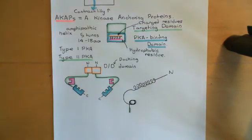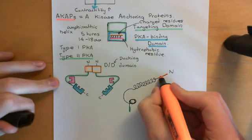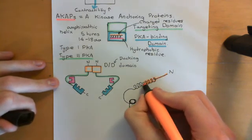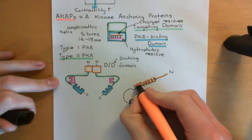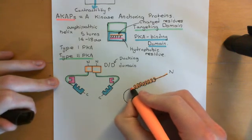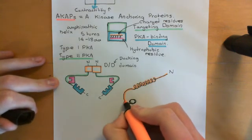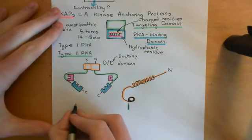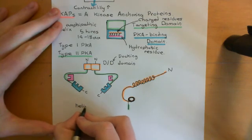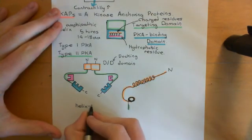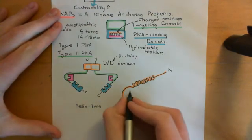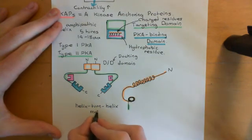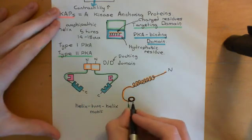All of this is the dimerization/docking domain, which consists of this helix-turn-helix motif — a helix followed by a turn followed by another helix — highlighted in orange here, followed by the linker region in green.